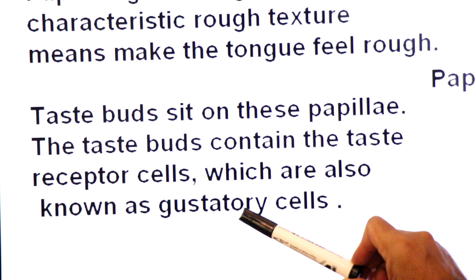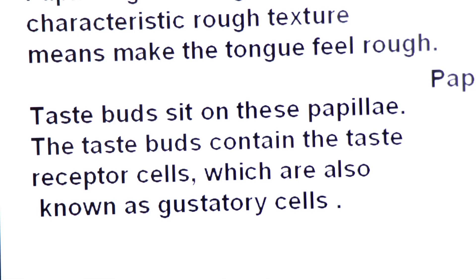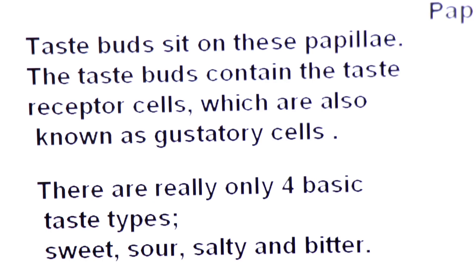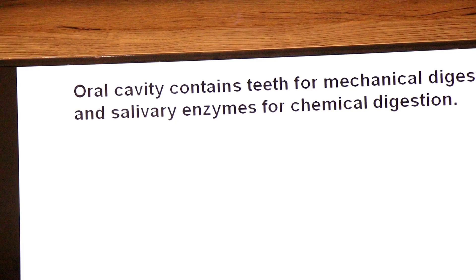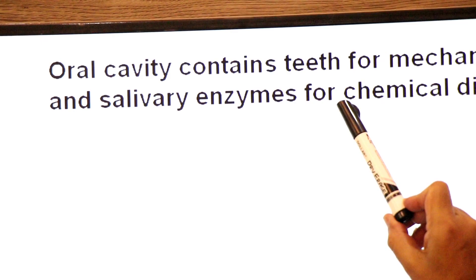Gustation is the sense of taste, and the cells that give you the sensation of taste are called gustatory cells. The taste buds contain gustatory cells, and there are only four basic types of taste: sweet, sour, salty, and bitter. The oral cavity contains teeth for mechanical digestion and salivary enzymes for chemical digestion.